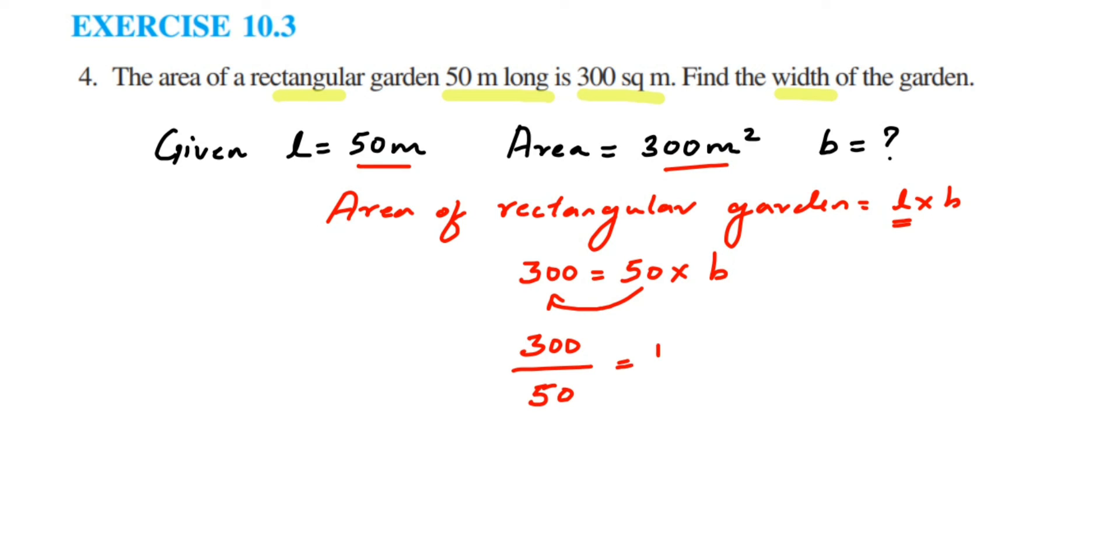Now cancel the zeros. 5 ones are 5, 6 are 30. So therefore we got b equals 6.